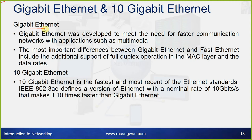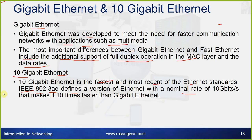Gigabit Ethernet was developed to meet the need for faster communication networks for applications such as multimedia. Key differences from Fast Ethernet include additional support for full-duplex operation in the MAC layer and higher data rates. The 10 Gigabit Ethernet, defined by IEEE 802.3AE, is the fastest and most recent Ethernet standard, with a nominal rate of 10 Gbps — ten times faster than Gigabit Ethernet.